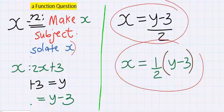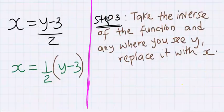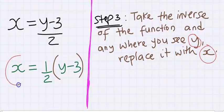Step number three: take the inverse of the function, and anywhere you see y, replace it with x. This is called the inverse of the function. That is, instead of x, I'm now going to have inverse of x.